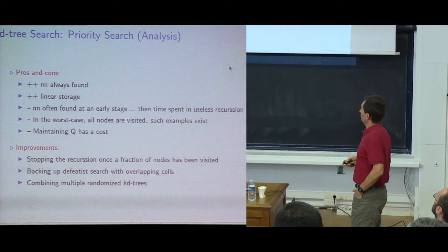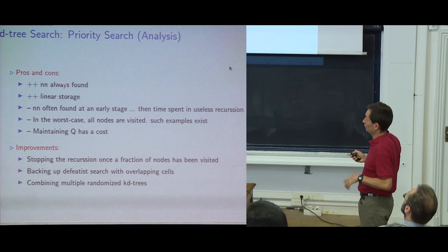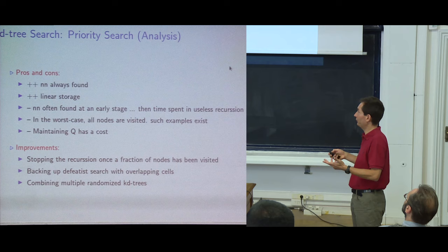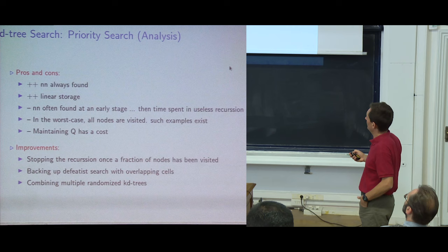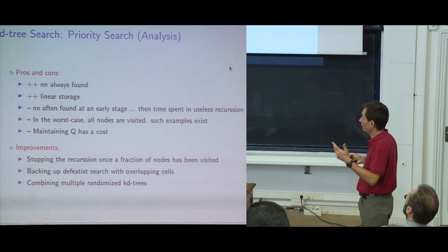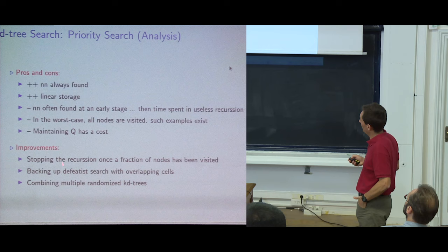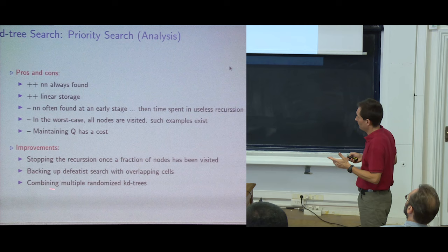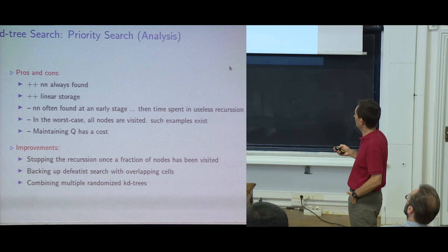Summary of strategies: Priority search always finds the nearest neighbor with linear storage, but practically the neighbor is found early and subsequent priority queue checks add cost without improvement. The defective search is very fast but may fail. People combined these ideas into randomized KD trees to get the best of both worlds.